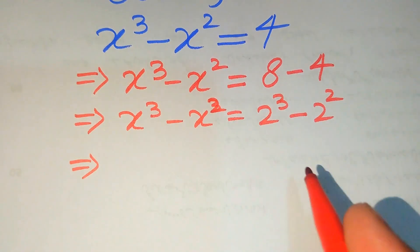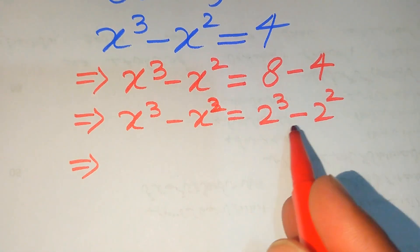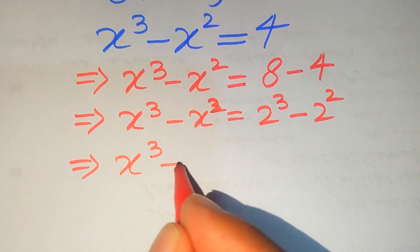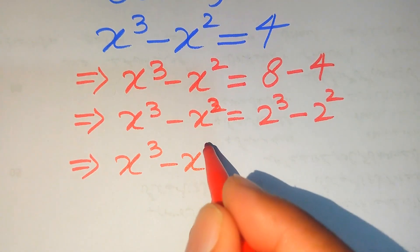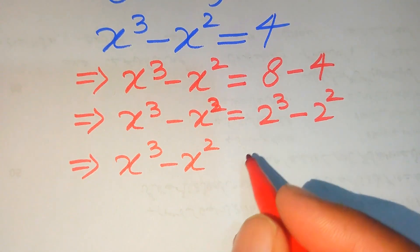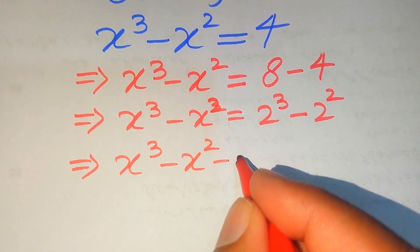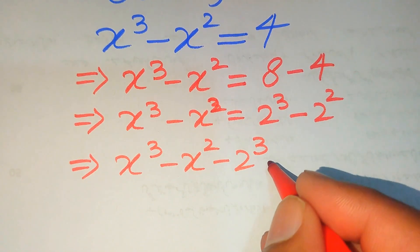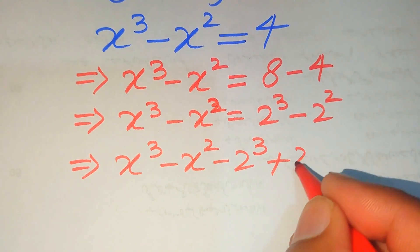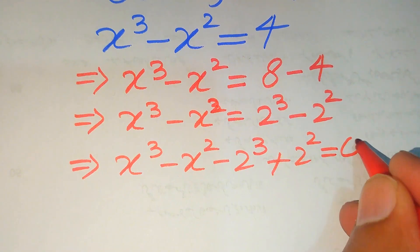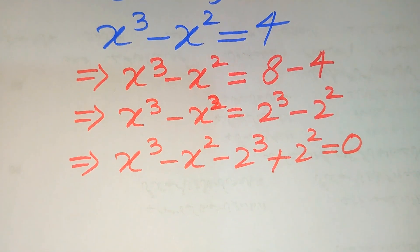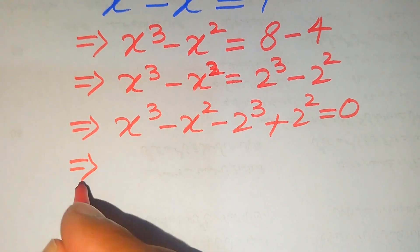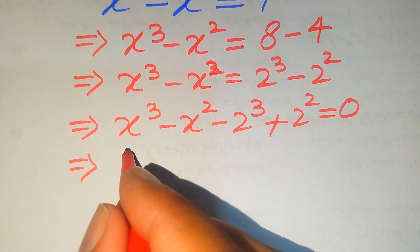Now we move these two terms to the left hand side. It becomes x cubed minus x squared minus 2 cubed plus 2 squared, and this whole equation equals 0.